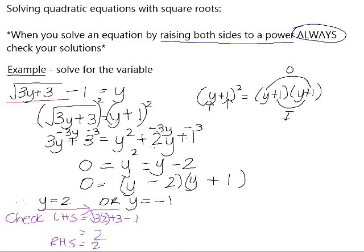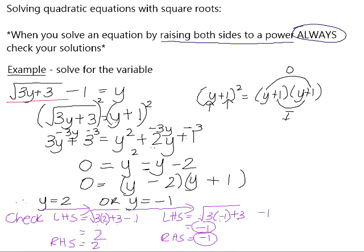That is a valid solution because the left-hand side and the right-hand side give you the same value. If we check y equals negative 1, the left-hand side is the square root of 3 times negative 1 plus 3, minus 1. 3 times negative 1 is negative 3; negative 3 plus 3 is 0; the square root of 0 is 0; subtract 1 is negative 1. The right-hand side is just y, which is negative 1 — so that is also a valid solution.